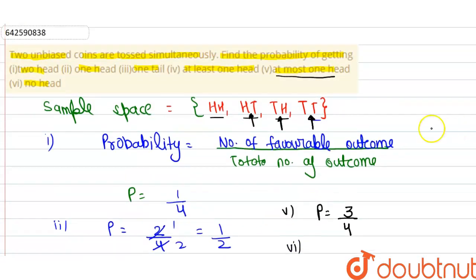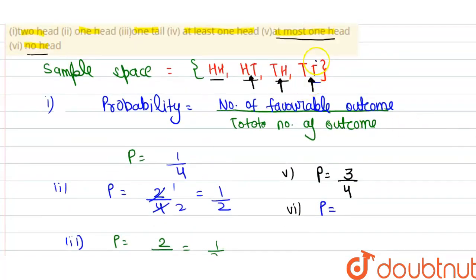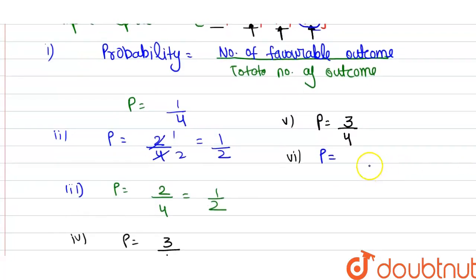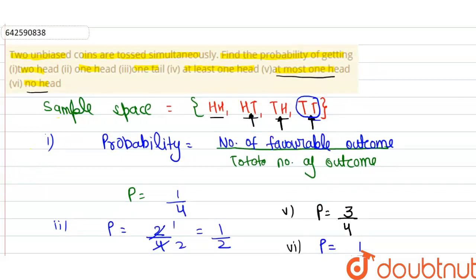For case six, we have to find the probability of no head. Only the tail-tail case is possible when there is no head. So the number of favorable outcomes is one and the total number of outcomes is four, giving probability one by four. In this way we calculate the probability for each of the given conditions.